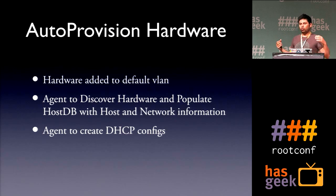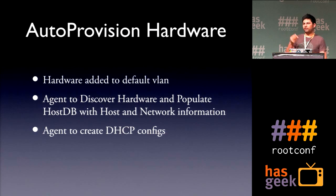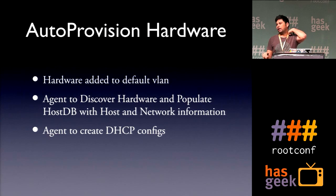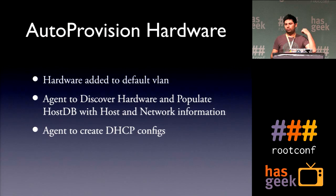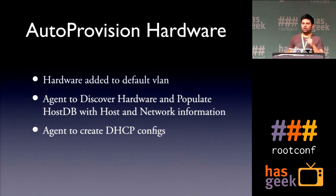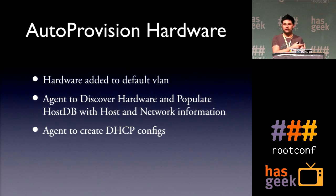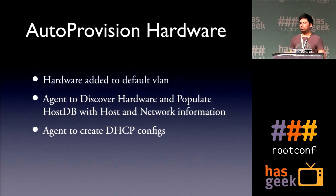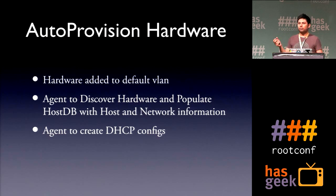How did we achieve it? You write an agent which does auto-discovery. When all the machines are racked, they have two interfaces — one connected to the regular LAN and another on a management interface. As soon as the machine comes up in a default VLAN, we PXE boot the box and do a discovery. We figure out how much memory it has, the MAC addresses, and all the information you need, then populate that into HostDB. Now inside HostDB you have all the machines that are not yet live — just discovered. Then you can mark them and give them a purpose.